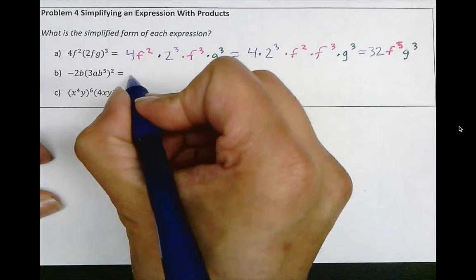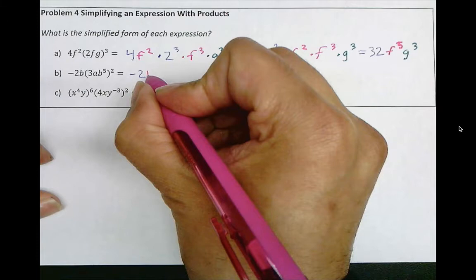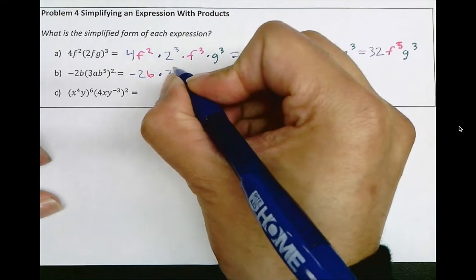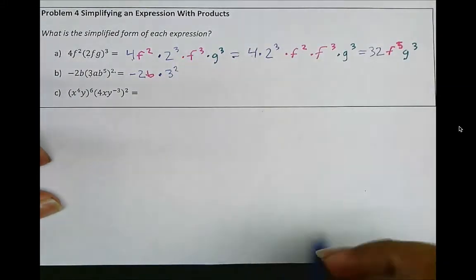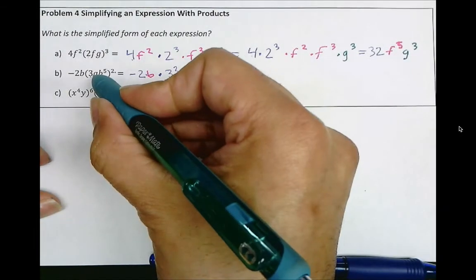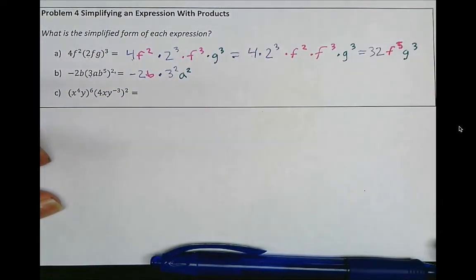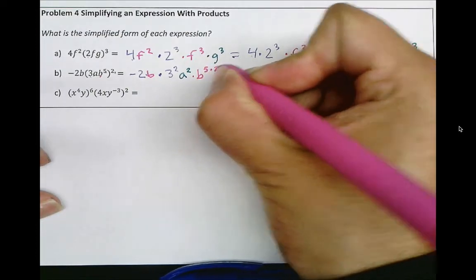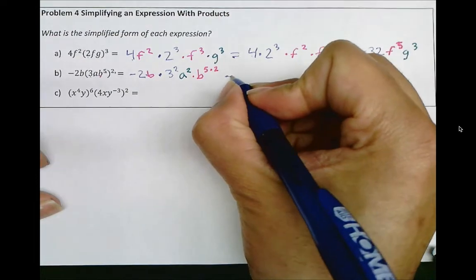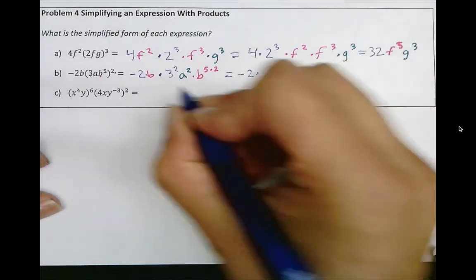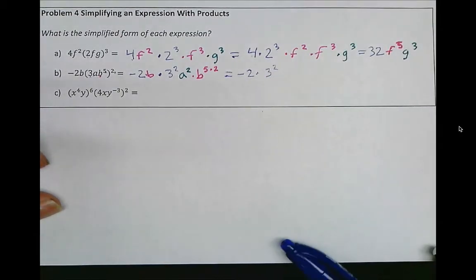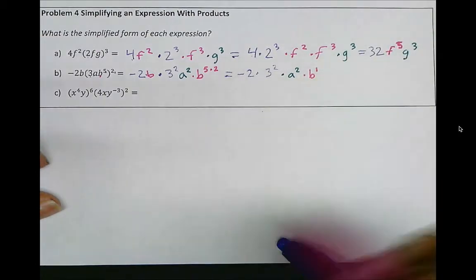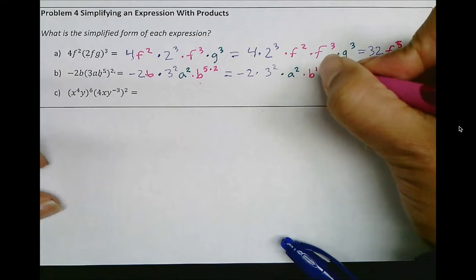Next problem. We'll bring over the negative 2 and the b, and now deal with what's in the parentheses: 3 to the power of 2, so that's times 3 to the power of 2. And now the a, that's a to the power of 2 also. And lastly, the b to the power of 5 raised to the power of 2, which means b to the power of 5 times 2, which is b to the power of 10.